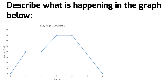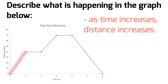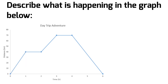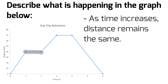Now we're going to interpret what is happening in each section of the graph. In the first section, as time increases, distance increases from 0 to 40 kilometers. In the second section, as time increases, distance remains the same — there's a one-hour window where that object is not moving.